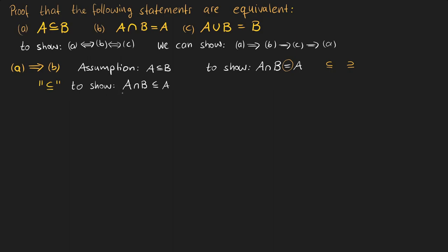Whenever we prove that one set is a subset of another, we take a random element from the subset. So let X be an element of the intersection of A and B, and we need to show that X is also an element of A. We replace the intersection with a logical AND, giving us: X is an element of A and X is an element of B. So we know that X is an element of A.